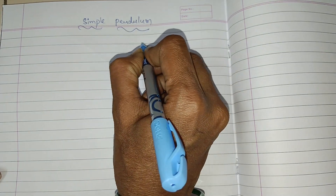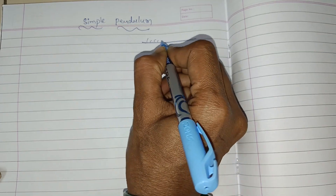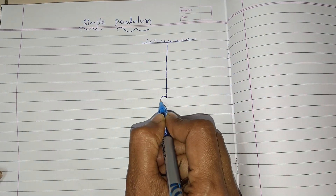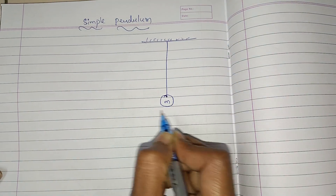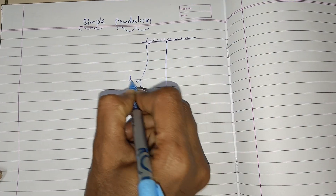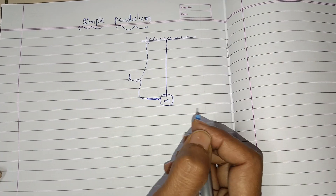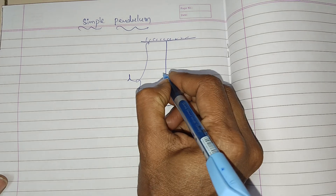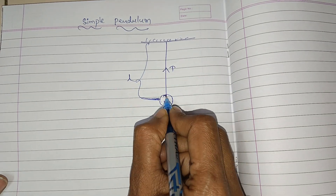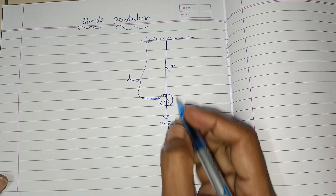Here I am drawing the simple pendulum diagram. This is the point of suspension. We are taking a simple pendulum of mass M. The length of the simple pendulum can be measured from point of suspension to center of the bob, and that can be taken as L. In mean position, tension will act upwards and weight will act downwards — these two will be balancing.